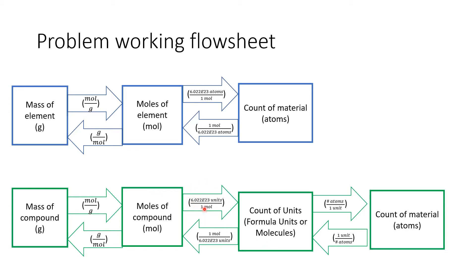I can use 6.022×10²³ to get to the number of formula units — in the case of ionic, which we're doing mostly — or the number of molecules. The terms matter later, but for right now they are functionally equivalent. Then there's the added complication of, in the case of carbon monoxide, if I'm asking how many total atoms — there are two atoms, one carbon and one oxygen, per formula unit. So I'd multiply that count of formula units times two atoms per formula unit. For H₂O, I might use three atoms total per formula unit, or if the question asks how many hydrogens, I'd use two hydrogen atoms per one formula unit.